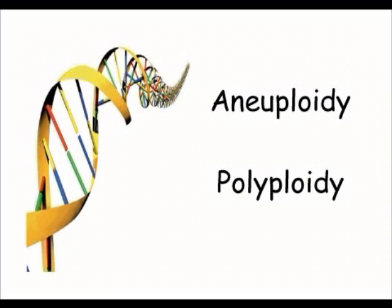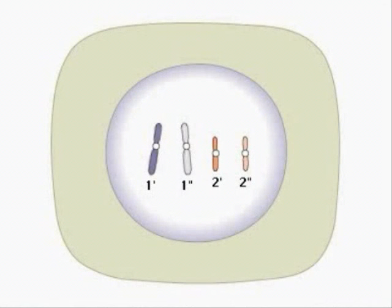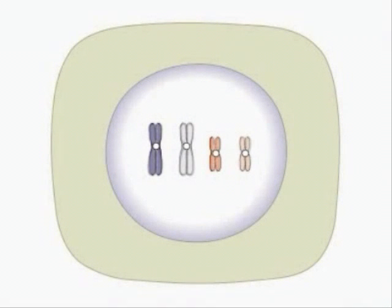Let's have a look at how that can actually happen. A really key term here is non-disjunction, which basically means that when the chromosomes line up during meiosis, they aren't actually pulled apart. On screen you'll see an image of a cell with a nucleus and two pairs of chromosomes — two number ones and two number twos. Those chromosomes replicate and become that X shape with a centromere in the middle, so each chromosome has been copied and the two copies are held together at the centromere.